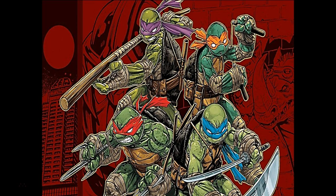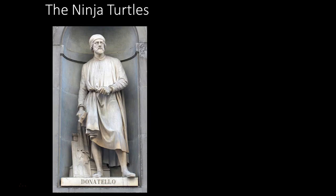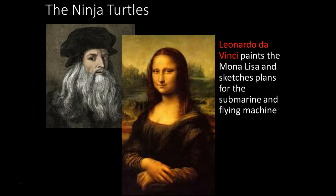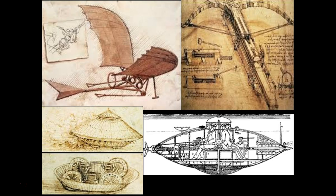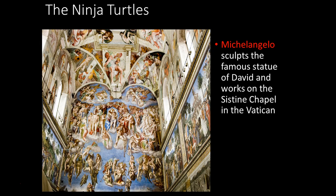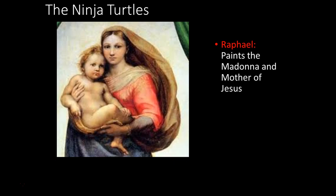Donatello is famous for his beautiful sculptures. Leonardo da Vinci is famous for the Mona Lisa and imaginative drawings — an early submarine, early tank, reloading crossbow, and flying machine. Michelangelo painted the famous Sistine Chapel, working on scaffolding with terrible neck pain. Raphael produced more beautiful paintings.